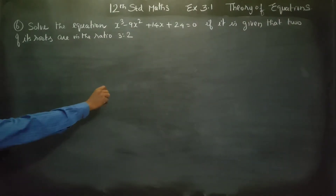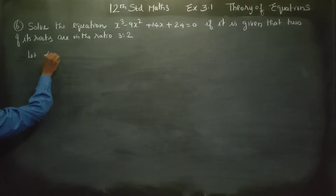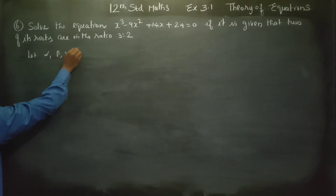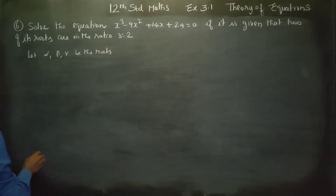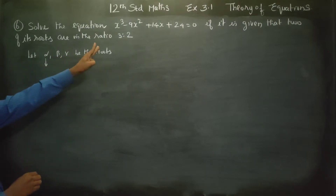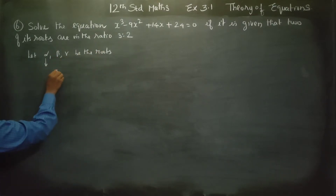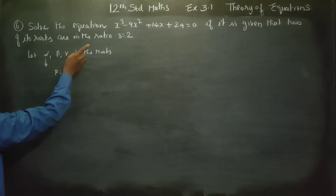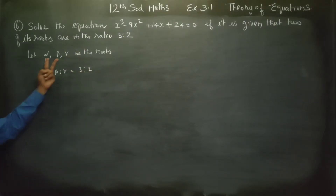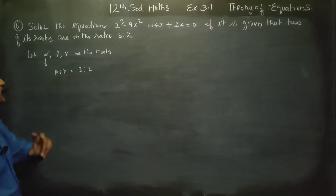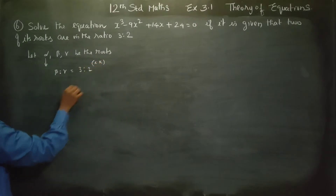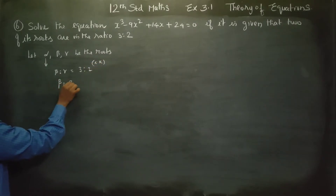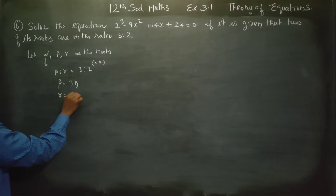First of all, let alpha, beta, gamma be the roots. Two roots are in the ratio 3 is to 2. We multiply by a constant, so beta is equal to 3k and gamma is equal to 2k.